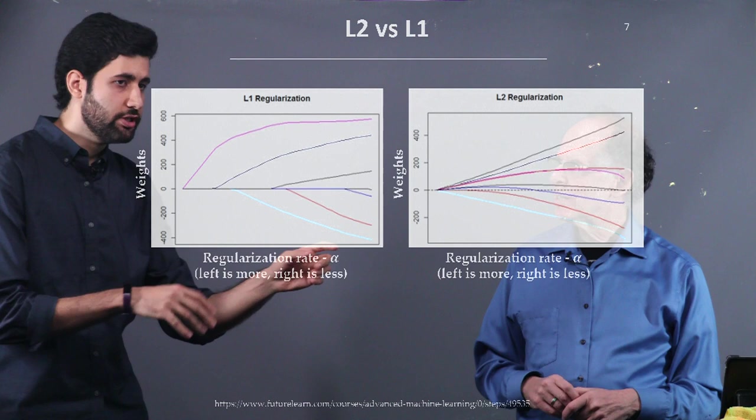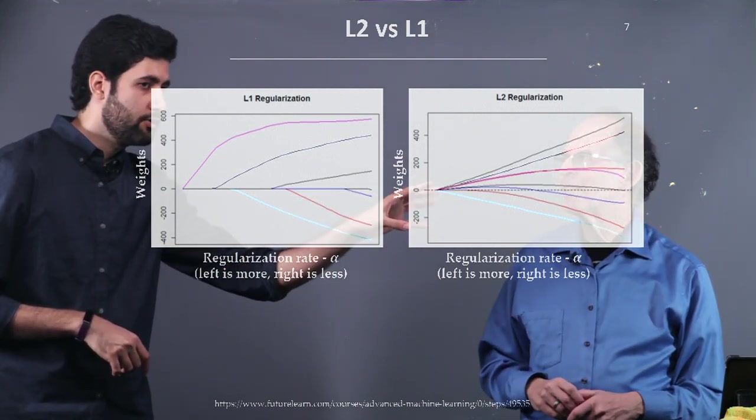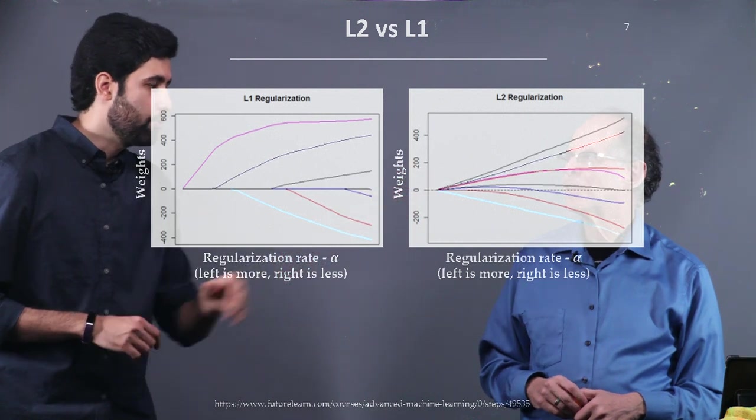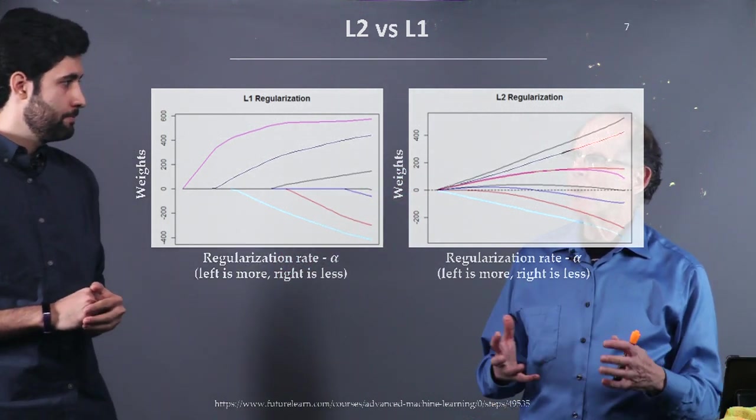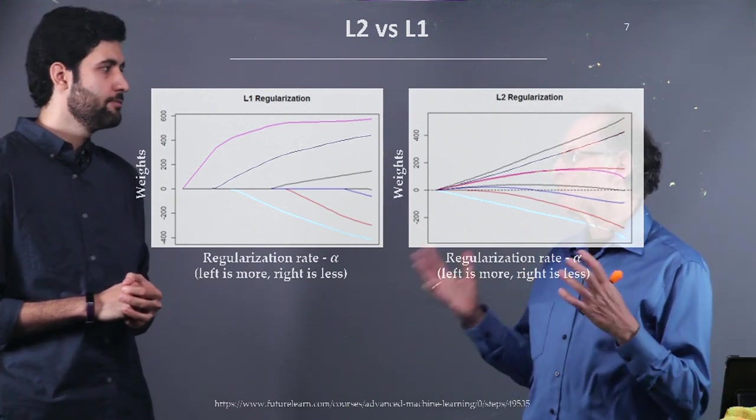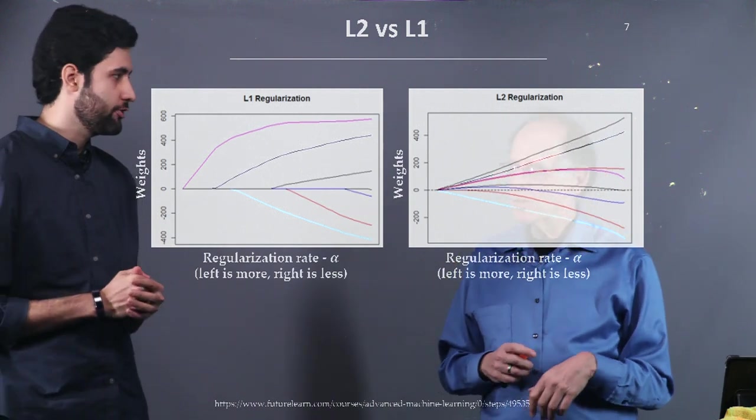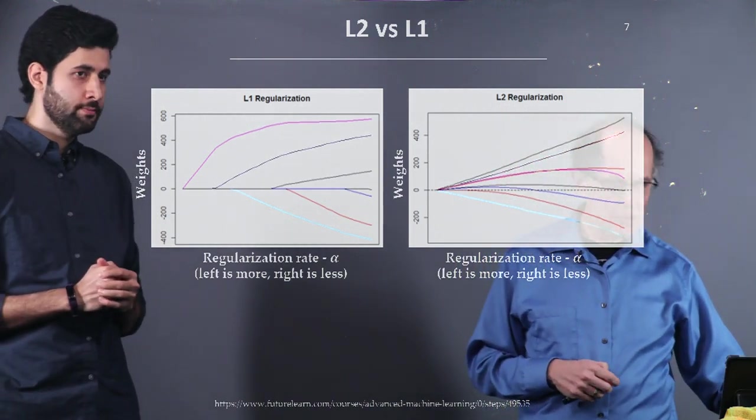So L1 regularization gives us exactly zero weights, but L2 just gives us small weights, not necessarily exactly zero. So if we want a sparse model, it would be delightful to have many weights equal to zero, as long as the network does the job. Which is the case of L1 regularization. So let's look further at how we descend.